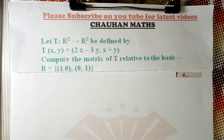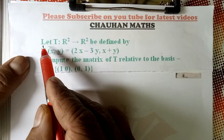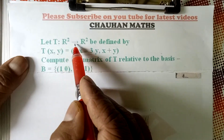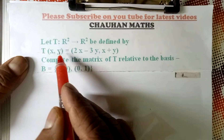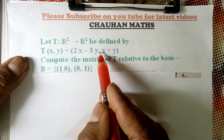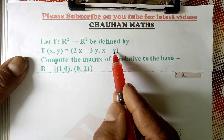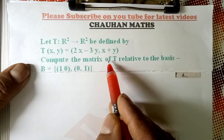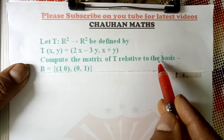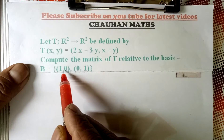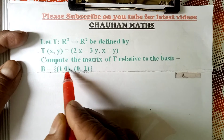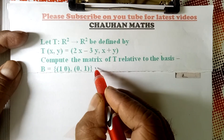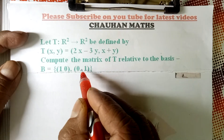With the help of an example, see the example here. Let T: R² to R² be defined by T(x,y) = (2x minus 3y, x plus y). Compute the matrix of T relative to the basis B = {(1,0), (0,1)}.